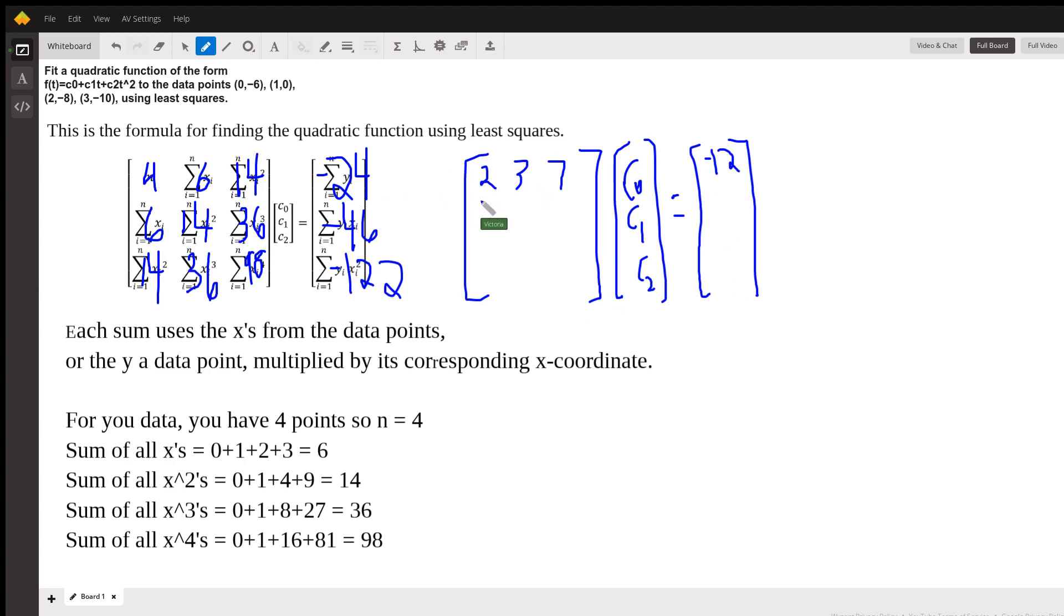This is going to be divided by 2. You get 3, 7, 18. And this is negative 23. Divide everything here by 2 and get 7, 18, 49. And this ends up being negative 61.